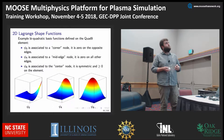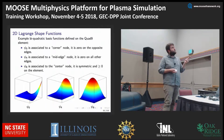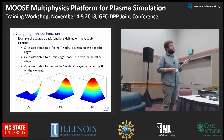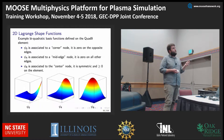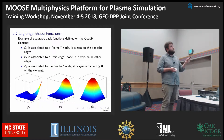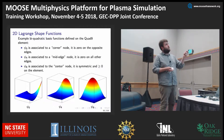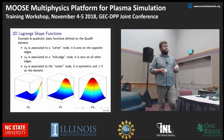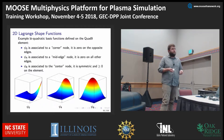In terms of 2D, this is an example of a 2D Lagrange shape function. When we're on a corner node, it's nonzero on that node and zero on the other edges. If it's associated with the center node, it's going to be one in the center and zero on the edges.